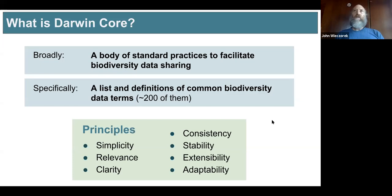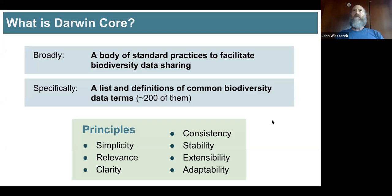Darwin Core also has some principles behind it that guide how it's maintained and why it is the way it is. Simplicity means that we want there to be a way without barrier for people without a lot of technical skill to still be able to share data, even if those data are dirty, even if they're not up to standards for the most recent taxonomy. The reason being that at least you can share, then you can take advantage of tools that help you improve the data after the fact. Relevance comes into play because we don't want to just have one term for every possible biodiversity concept — we only want them there if we're committed to sharing information and doing something with it.